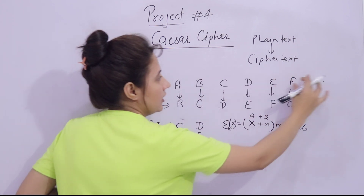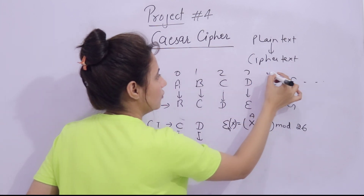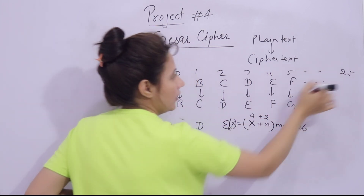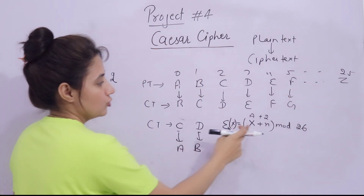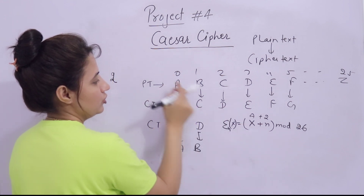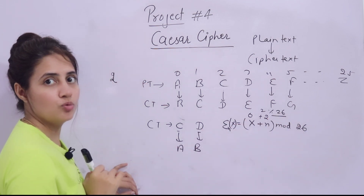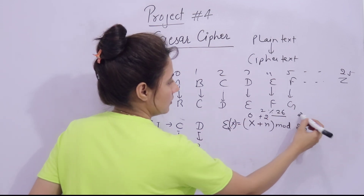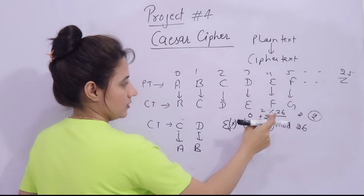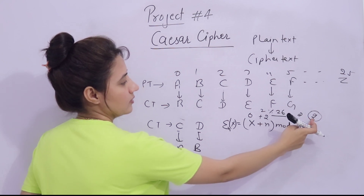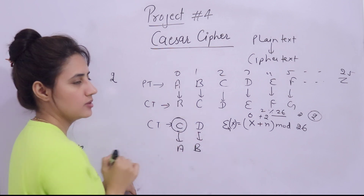So X means the position of the letter. Suppose the letter is 'a' — its position is 0. Plus N is the shift key, suppose 2. So 0 + 2 = 2, and 2 mod 26 = 2. At index 2 we have 'c', so 'a' would be replaced with 'c'. That's the encryption formula worked out.